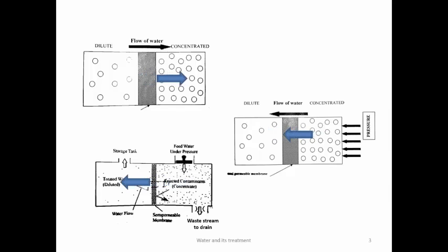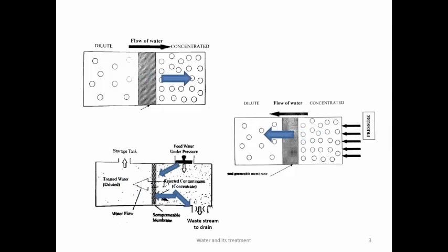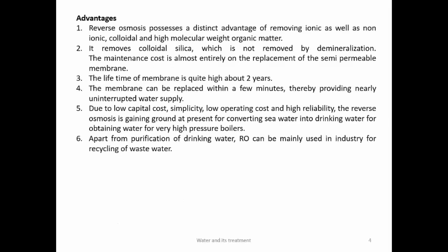After some time the semipermeable membrane gets blocked, so it is divided into two parts: one for purification and one for washing. Rejected contaminants are removed to drain as waste, and soft water is collected and passed to a storage tank. Advantages of RO: removes ionic and non-ionic colloidal high molecular weight organic matter; removes colloidal silica not removable by demineralization. Maintenance cost is mainly membrane replacement; membrane lifetime is around two years and can be replaced within minutes.